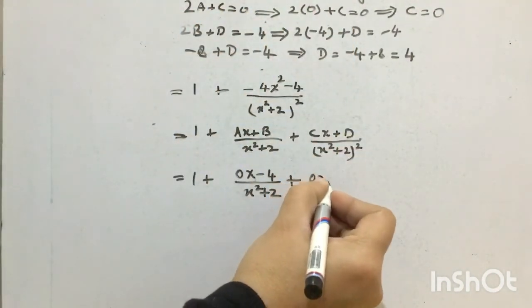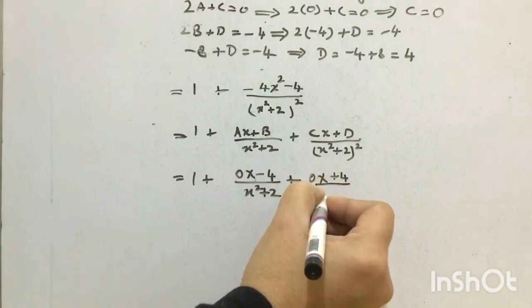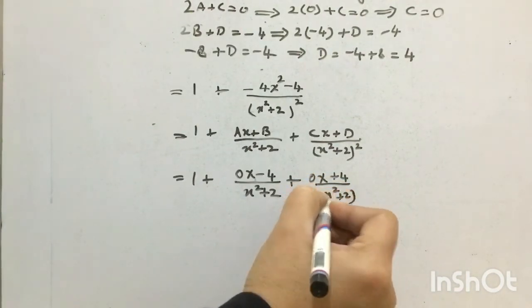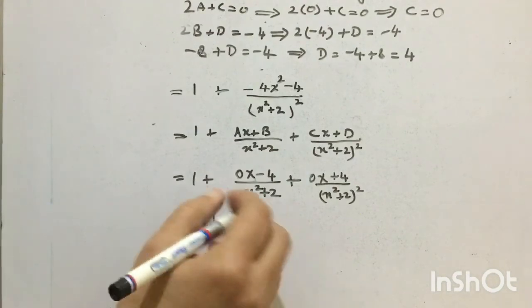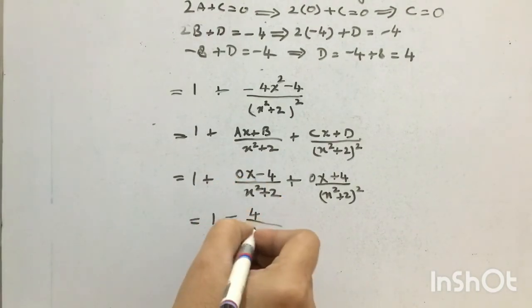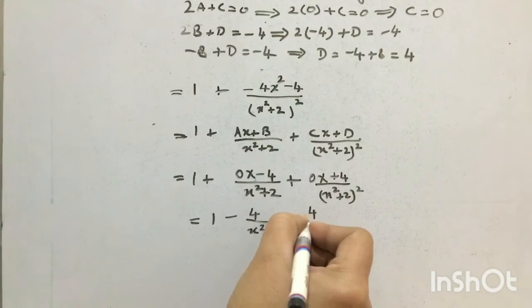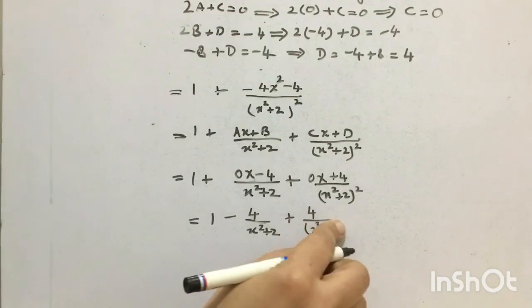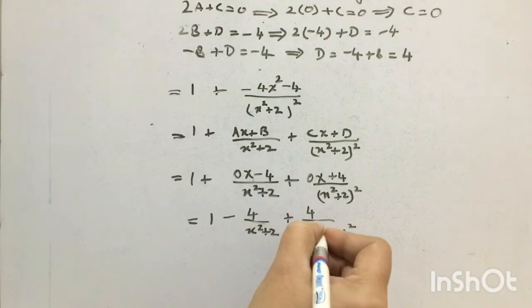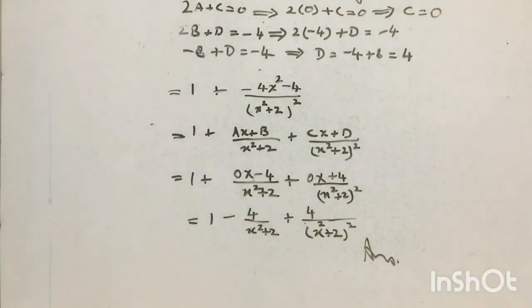So with a equals 0, b equals minus 4, c equals 0, and d equals 4, we get the final answer as 1 plus minus 4 over x square plus 2, plus 4 over the square of x square plus 2. The question is completed. You can solve the entire exercise by yourself. Allah Hafiz, till tomorrow.